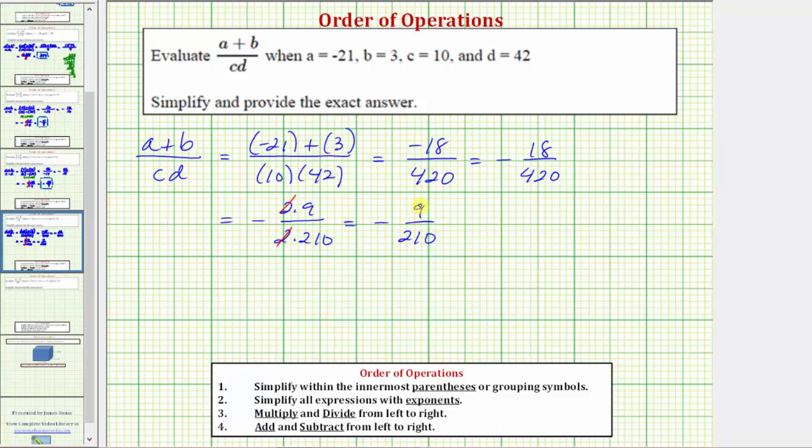But in this form, nine and 210 still share a common factor of three. To show the common factor of three, let's write this as negative three times three over three times seventy. And again in this form, because three divided by three simplifies to one, the fraction simplifies to negative three over seventy.